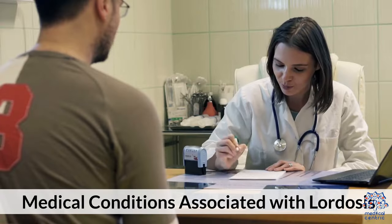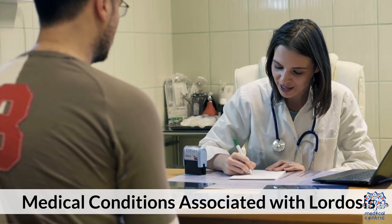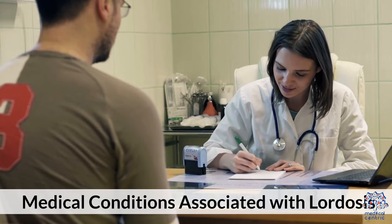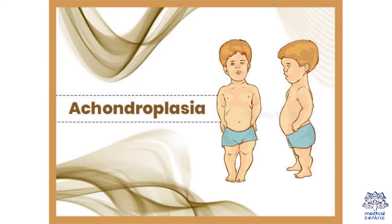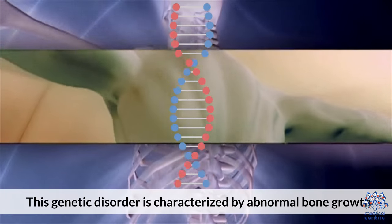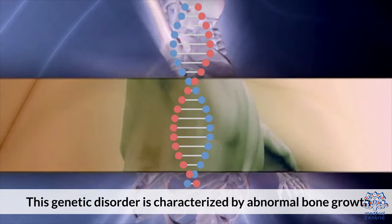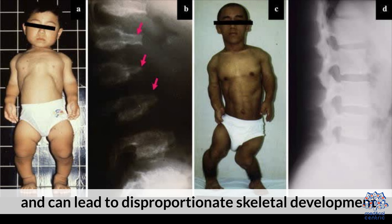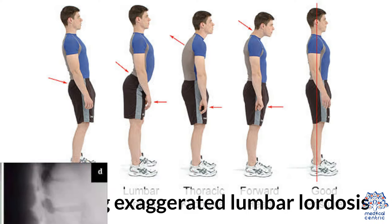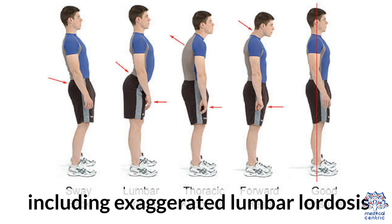Medical Conditions Associated with Lordosis. 1. Achondroplasia: This genetic disorder is characterized by abnormal bone growth and can lead to disproportionate skeletal development, including exaggerated lumbar lordosis.